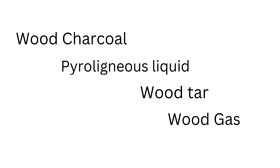Destructive distillation of wood yields the following products: first, you obtain wood charcoal; secondly, you obtain pyroligneous liquid; third, you have wood tar; and finally, you have wood gas. Pyroligneous liquid is a very important liquid that can be separated into different organic compounds. For example, it contains propanol, ethanoic acid, other aromatic hydrocarbons, and methanol as well, which of course is very useful.